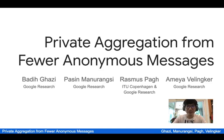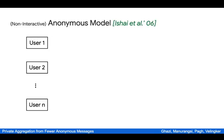Hi everyone, thank you for tuning in today. This is Joy, working with Badi Kasi, Rasmus Pa, and Amelia Wellinger. We study scale computation in the so-called anonymous model, which was proposed by Ishai et al. in 2006.